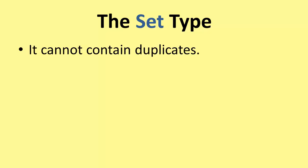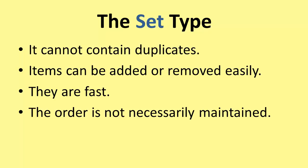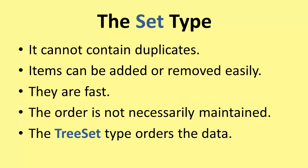Now let's get on to the set type. This cannot contain duplicates — so if Wix appeared twice, when you print the list there would still be only one Wix; the second is ignored. Items can be added or removed easily, and sets are faster than lists. The order, though, is not necessarily maintained, unlike an ArrayList or LinkedList where insertion order is preserved. The TreeSet type does order the data, however — regardless of the order in which you put data in, the TreeSet will leave it ordered automatically.